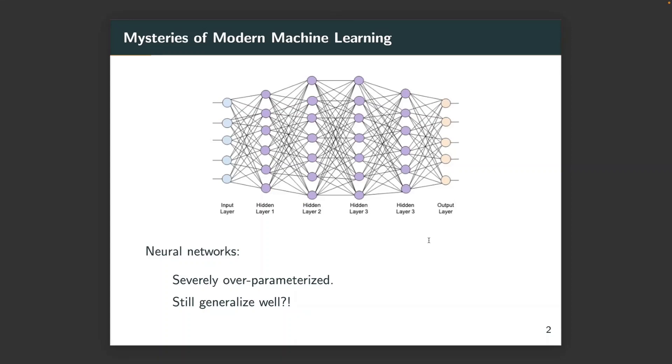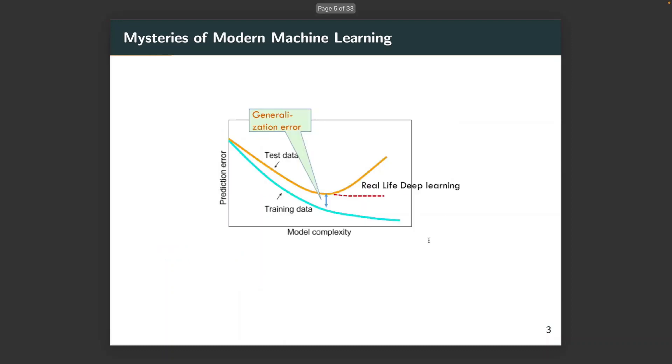For example, modern neural networks are severely over-parameterized. The number of parameters can be comparable to the number of samples, which is beyond conventional wisdom of learning theory. More specifically, classical learning theoretical bounds suggest that your model complexity should not be too big so as to reach optimal generalization behavior.